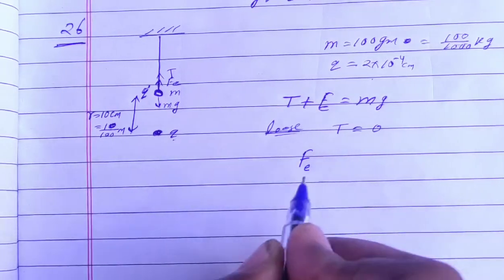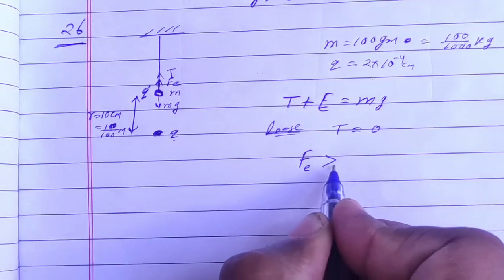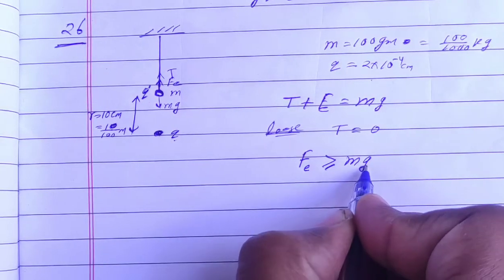If electrostatic force is greater, the bob will move up. So it should be greater than or equal to mg.